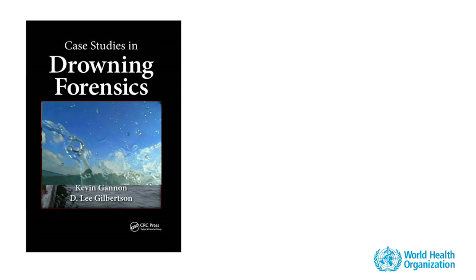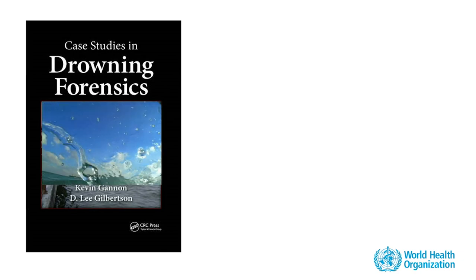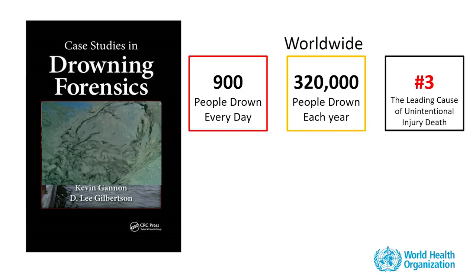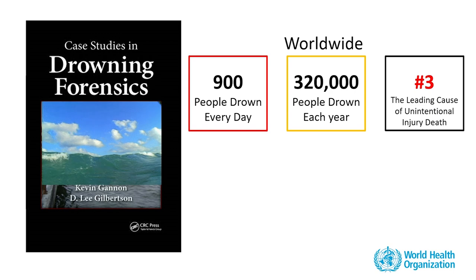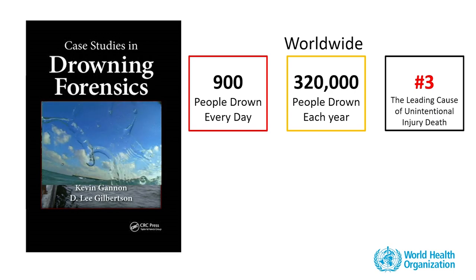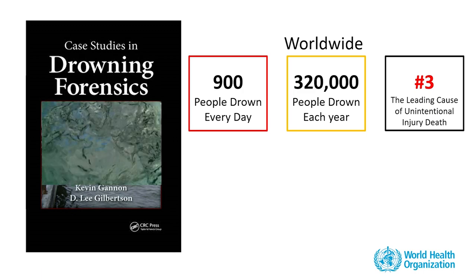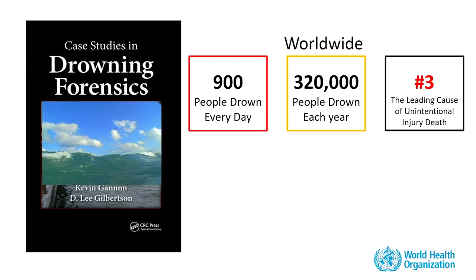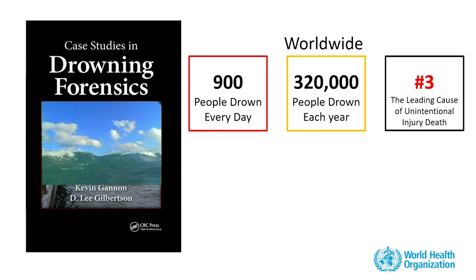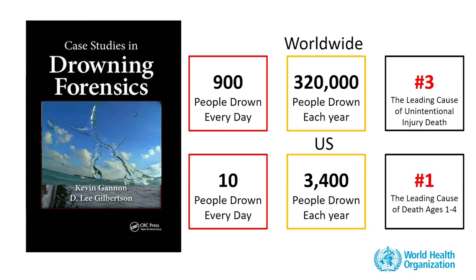Looking at the statistics from the global health organization, drowning is the number three leading cause of unintentional injury death. In the United States alone, almost 3,000 people die from drowning. So it's a big problem.